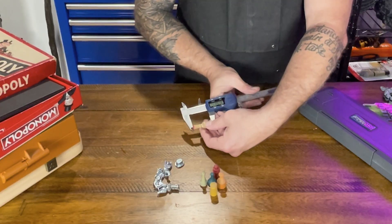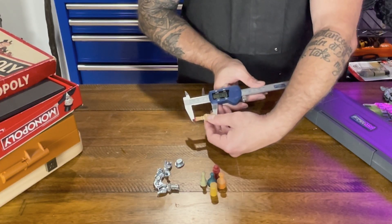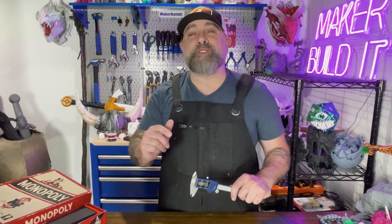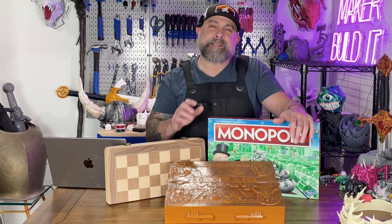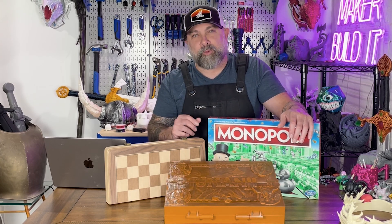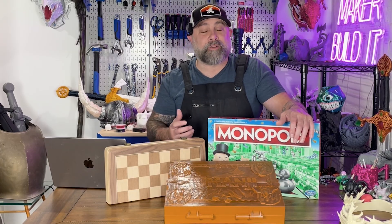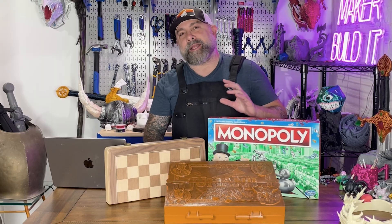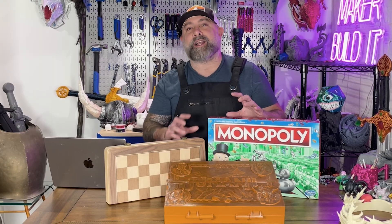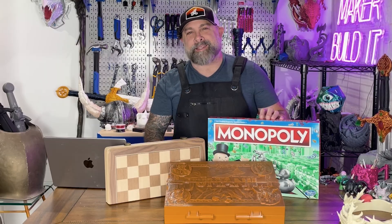Here's the chart of all the Monopoly pieces in terms of minimums and maximums. If you want to download this chart, it will be available at makerbuildit.com — link in the description below. When you're designing your own pieces, you're going to want to use some 3D modeling software such as Nomad Sculpt, Blender, or even Tinkercad, depending on what type of pieces you want. We're going to use Nomad Sculpt to create some custom game pieces.